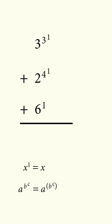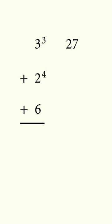Finally, x to the power of 1 is equal to x, so we can simplify all three numbers. We are left with 3 to the power of 3, which is 27, 2 to the power of 4, which is 16, and 6 is 6. Add these together, and we get the answer of 49.